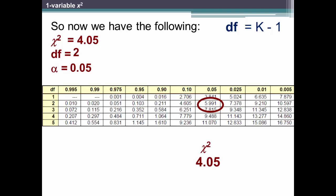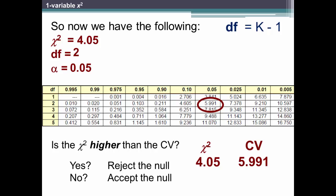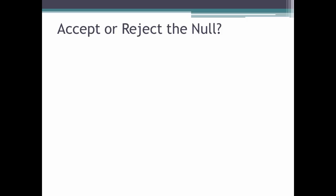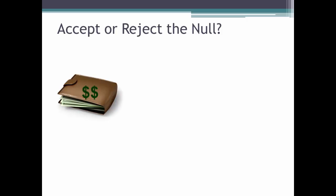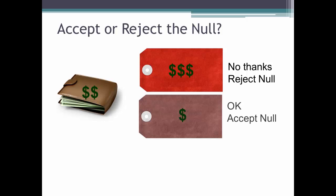Now compare your calculated chi-square with the critical value. If your calculated chi-square is higher than the critical value, you can be 95% sure that what you observed is really different from what you would expect to see, so you would reject the null hypothesis. If your calculated chi-square is lower than the critical value, you should accept the null hypothesis. One way to remember this: think of what you do when you buy something. If the price is higher than the money in your wallet — in this case the critical value — you don't purchase, so you reject the null. If the price is low, you accept the purchase, so you accept the null.